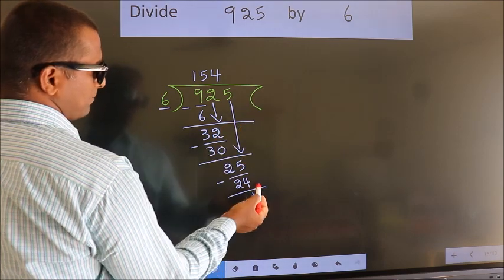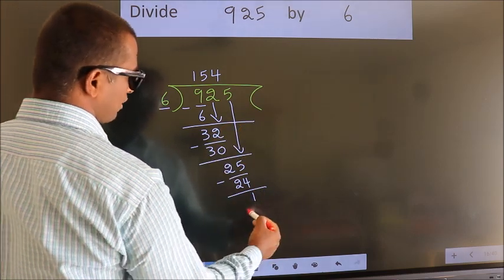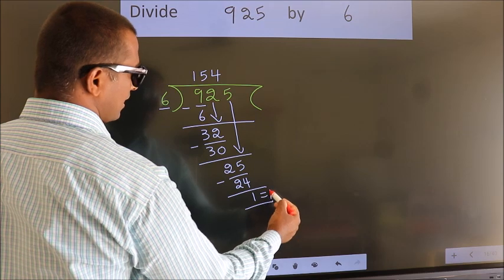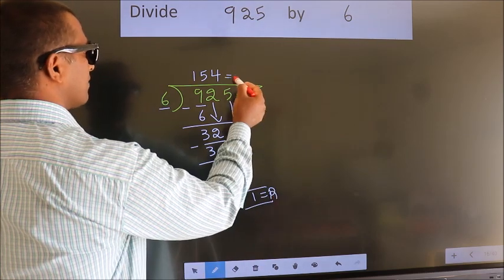No more numbers to bring down. So we stop here. This is our remainder. This is our quotient.